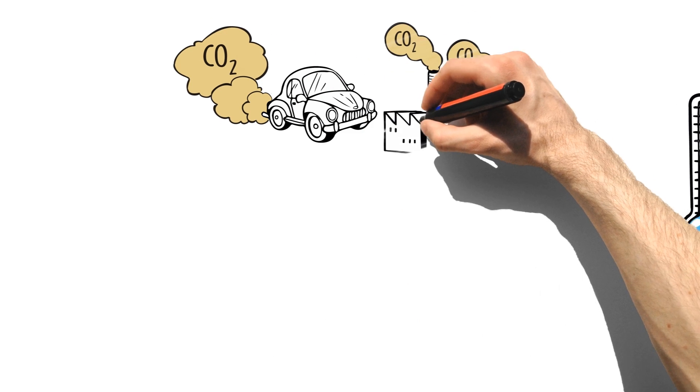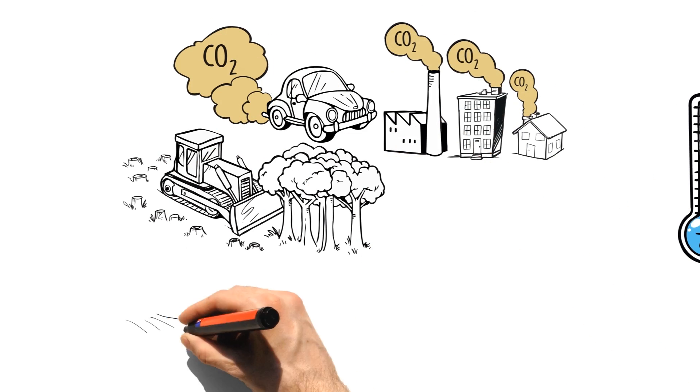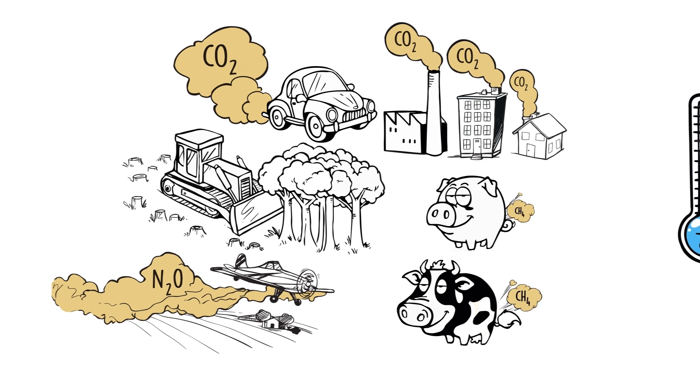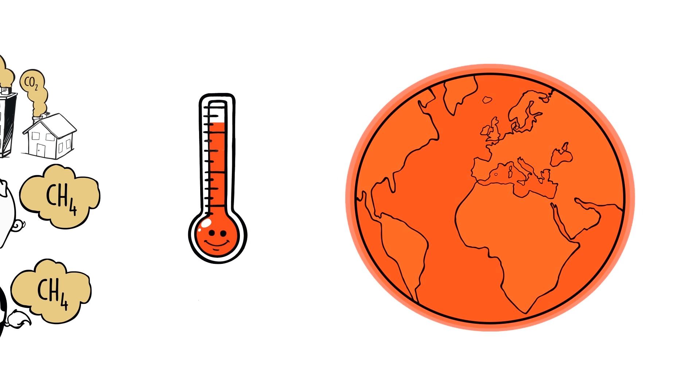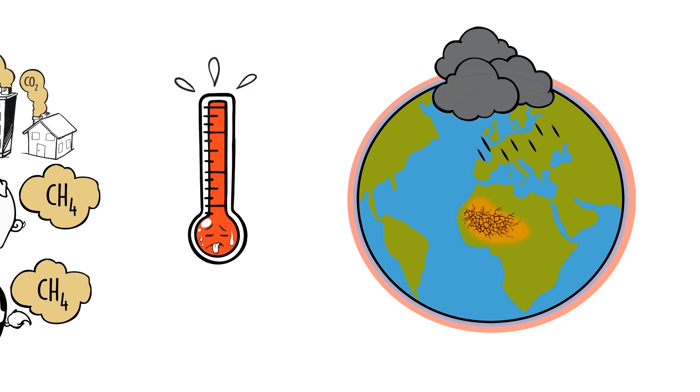Since the Industrial Revolution, large amounts of greenhouse gases are released into the atmosphere as a by-product of human activities. Their rising concentration in the atmosphere leads to an increase in the average global temperature, which in turn disrupts our climate.